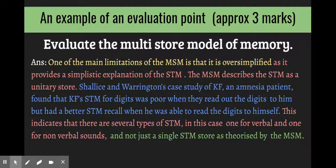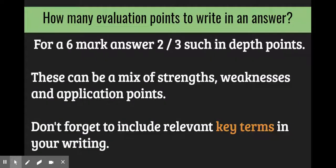So how many of these in-depth points in an answer? For a six mark answer, two to three such in-depth points. You are quite likely to be asked to evaluate in essay questions where AO3 can be six marks or ten marks. Accordingly, adjust how many points you need to put in there. These can be a mixture, so you can use one strength, two weaknesses, one application. It doesn't have to be balanced out.